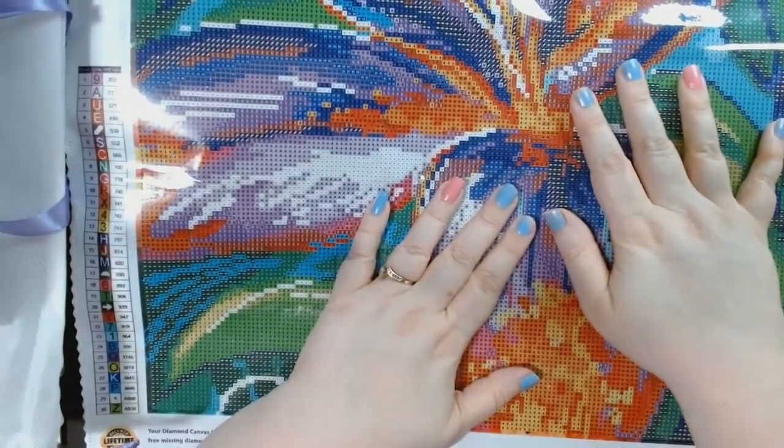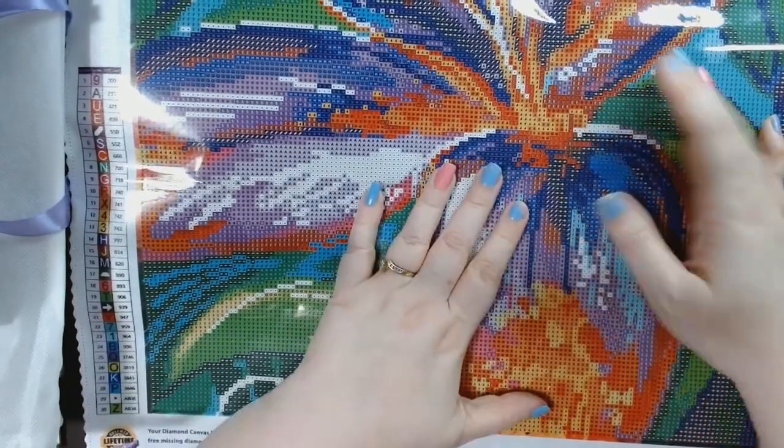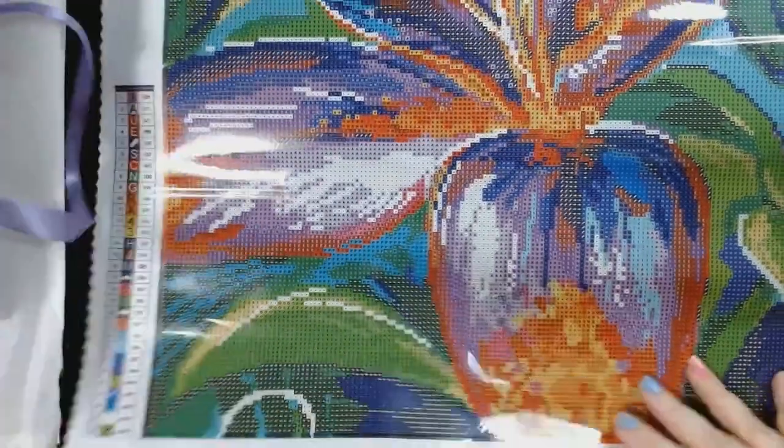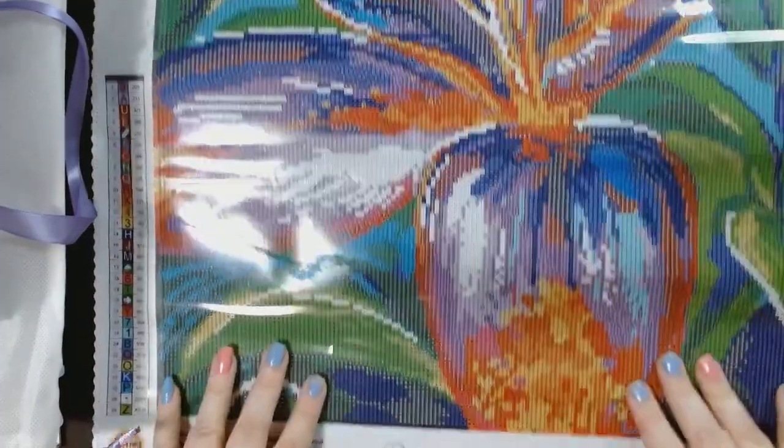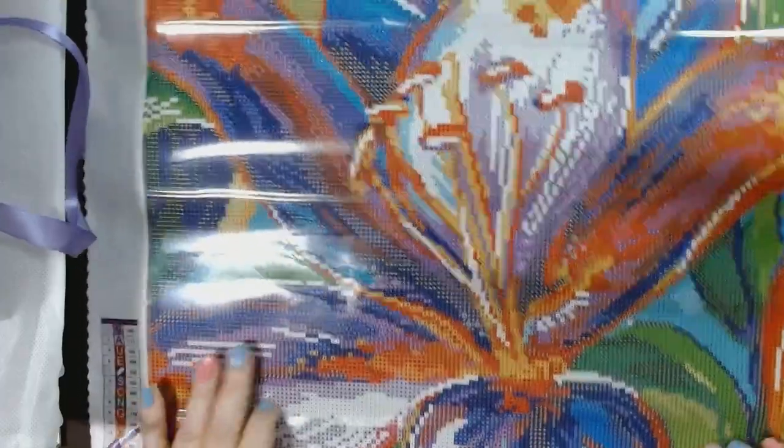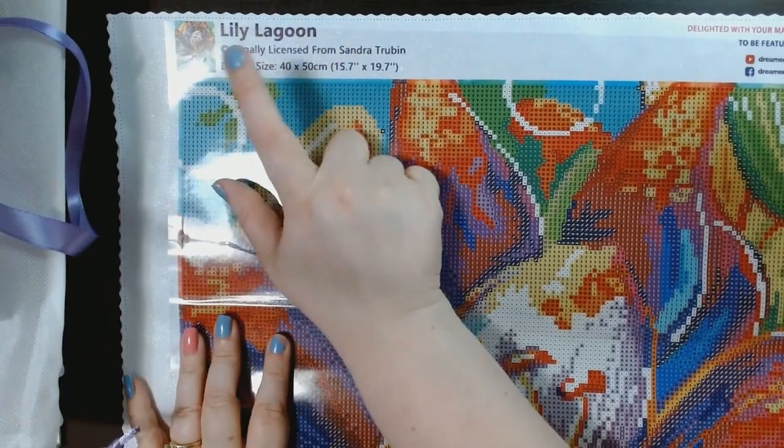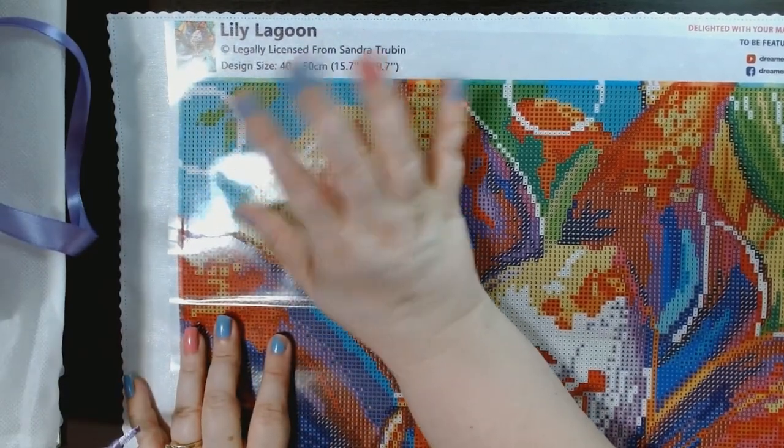Let's look at the canvas. Oh yeah, this is a new canvas too because of the material. But this is similar to Diamond Art Club where it has like, it's all sparkly. The canvas is all sparkly. Let's quickly do a canvas tour here and see what's on the canvas. We got the title, Lily Lagoon, legally licensed from Sandra Trubin. And I already went over the sides a couple times already now.